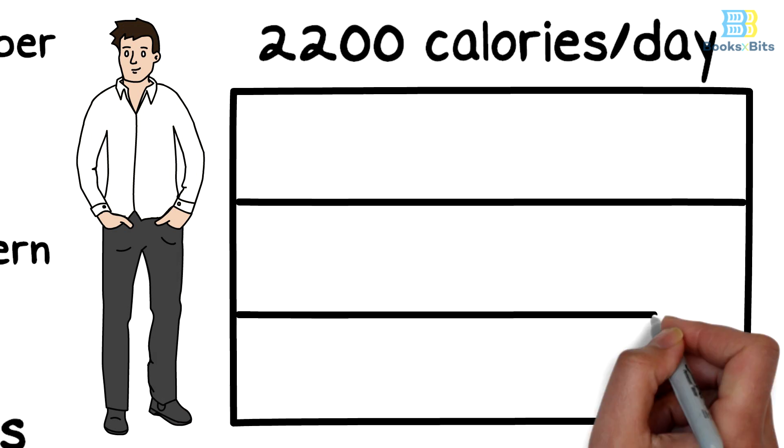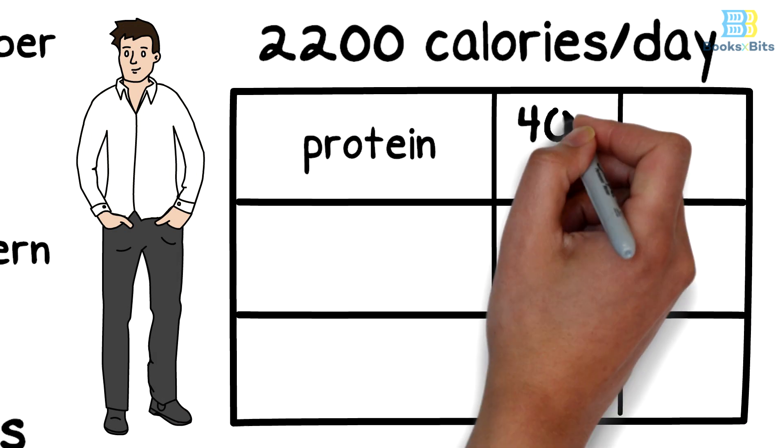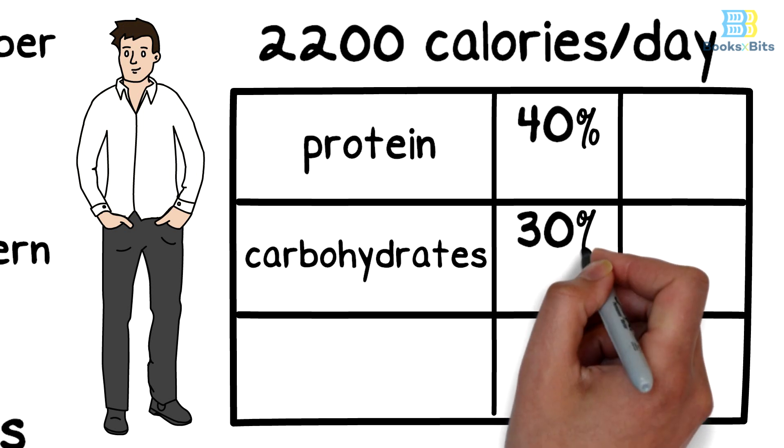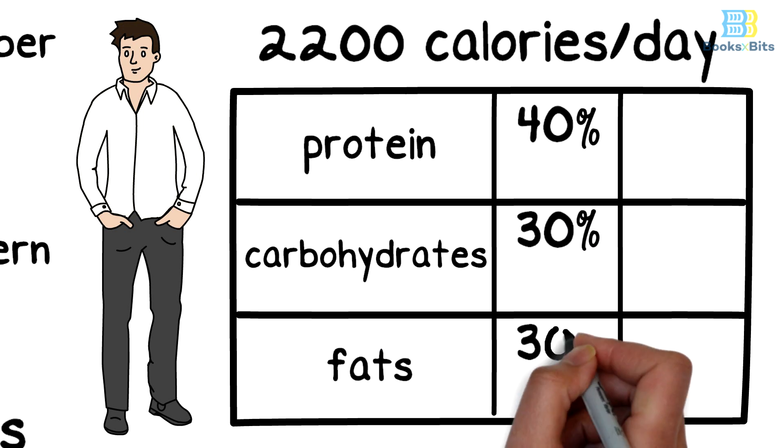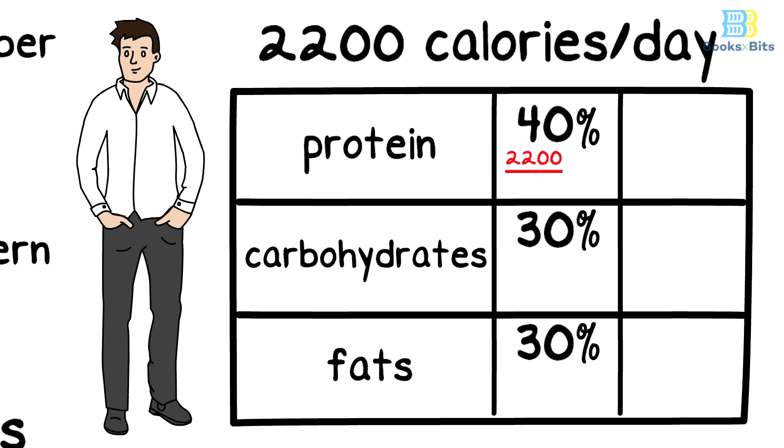the percentage of protein is 40%, carbohydrates is 30%, and fats is 30%, then by a simple calculation, the daily number of grams this person needs